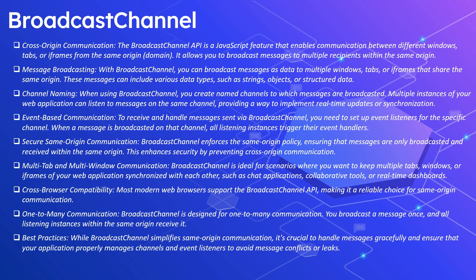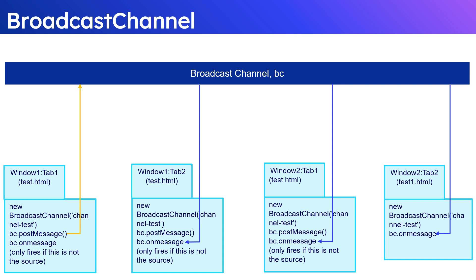In this diagram, we use the BroadcastChannel API to broadcast messages between different windows and tabs. In window one, tab one, we access test.html and create a new BroadcastChannel named 'channelTest', through which we can post and receive messages. The onmessage event listener triggers only if this window or tab is not the source of the event. In window one, tab two, the same test.html is opened with the same channel name.